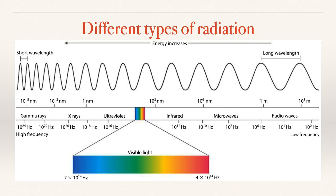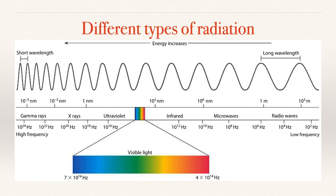Let me start off by talking about a bit of basic physics. This is the electromagnetic spectrum. It demonstrates a range of functions provided by different wavelengths of energy. Long wavelengths include things like radio waves and microwaves, which are pretty safe. In the middle you have visible light, so red to violet. The shorter the wavelength, the more energy they have and the more potential damage they can cause. That's where you get into x-rays and gamma rays.